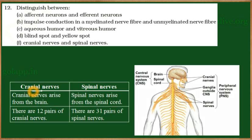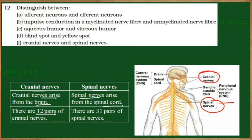The last one is cranial nerves and spinal nerves. The peripheral nervous system includes neurons that arise from the central nervous system and are distributed throughout the body. Neurons that arise from the brain are called cranial nerves, while neurons that arise from the spinal cord are called spinal nerves. These were the differences between afferent and efferent neurons, myelinated and unmyelinated nerve fibers, aqueous and vitreous humor, blind spot and yellow spot, and cranial and spinal nerves.